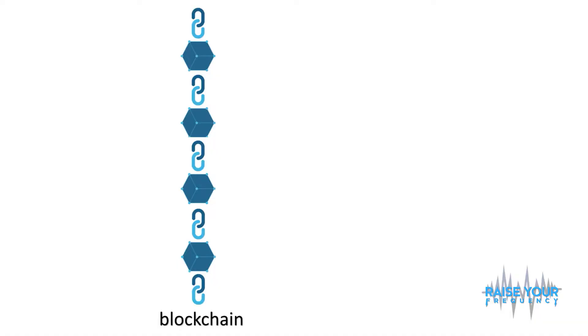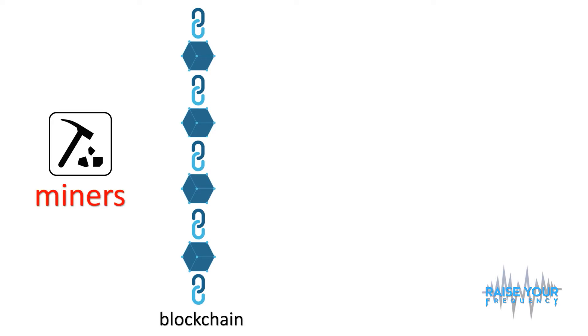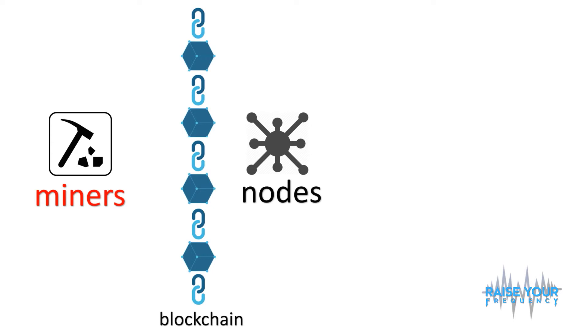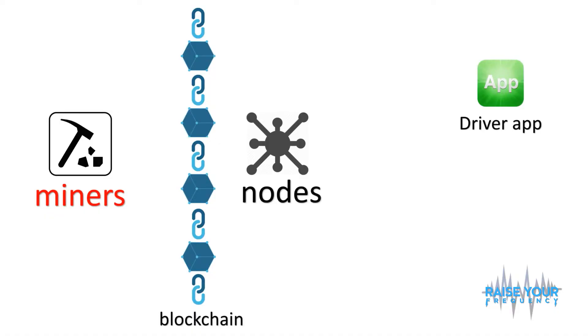So in this RideCoin blockchain, just like Bitcoin or other blockchains, there are miners, there are nodes, and there are wallets. In this case it's like a wallet, but there are two different types — so I'll call them apps instead. There's going to be the driver app and the customer app, for the person who needs a ride.